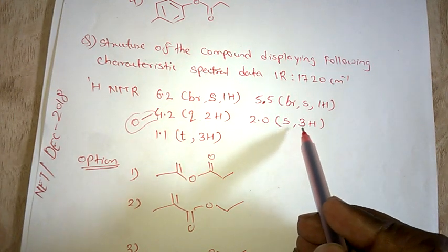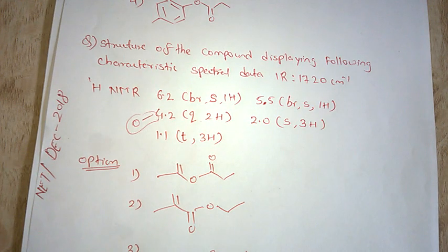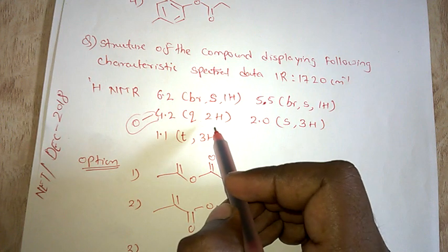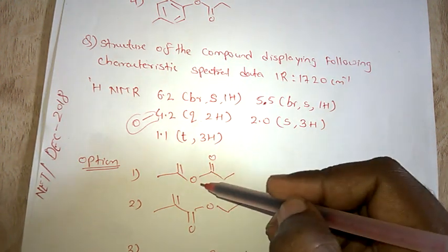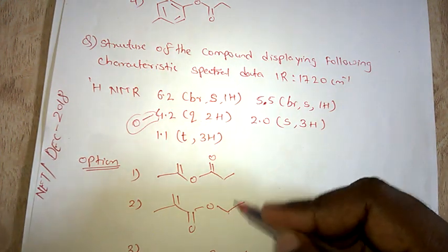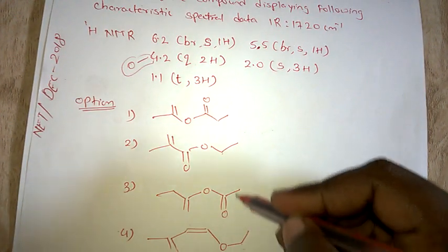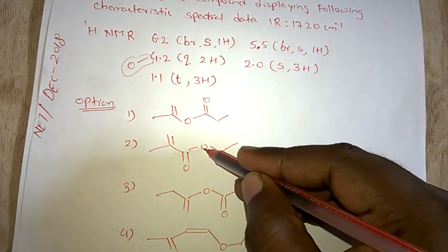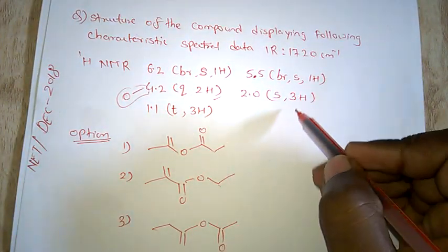Let's see, 4.2 quartet 2H means that CH2 is attached to an electronegative atom. Here you can see oxygen - the CH2 is attached to oxygen. This CH2 and there is no CH2 here, so this is CH2.